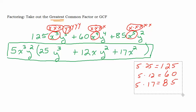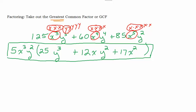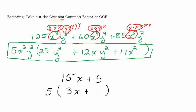Let me show you one oddball type thing that can happen, just in case you run into it. Let's say we had something like 15x plus 5. What's the greatest common factor? The second term doesn't even have any variables, so I just think: what's the biggest number that goes into 5 and 15? That's 5. So that leaves me with 3x inside — and this is the part I want to make sure you understand. When you take out a 5, remember you're dividing, so you have to put a 1 here. Some students will just leave it blank, but you're dividing, and you need to check by redistributing. Anytime what you're taking out is exactly the same as the term, you have to write 1.